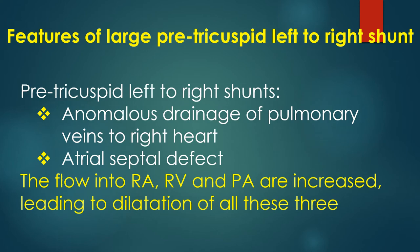Pre-tricuspid left to right shunts are either due to an anomalous drainage of pulmonary veins to the right side of the heart, or an atrial septal defect. The flow into the right atrium, right ventricle, and pulmonary artery are increased, leading to dilatation of all these chambers.